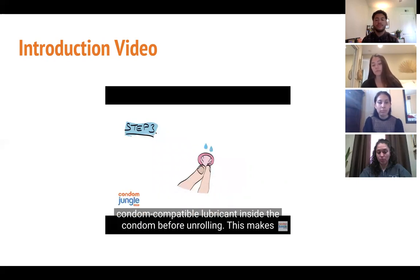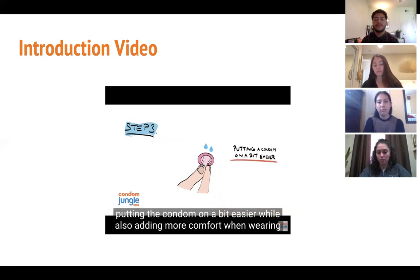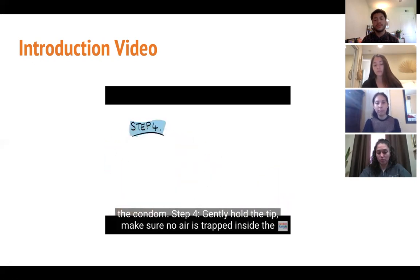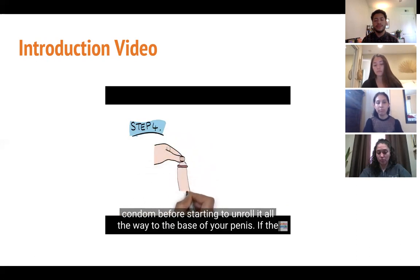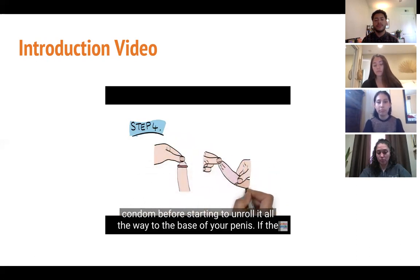Step three: most condoms have some lubrication, but you can add a few drops of condom-compatible lubricant inside the condom before unrolling. This makes putting the condom on a bit easier while also adding more comfort. Step four: gently hold the tip, making sure no air is trapped inside the condom before starting to unroll it all the way to the base of the penis.